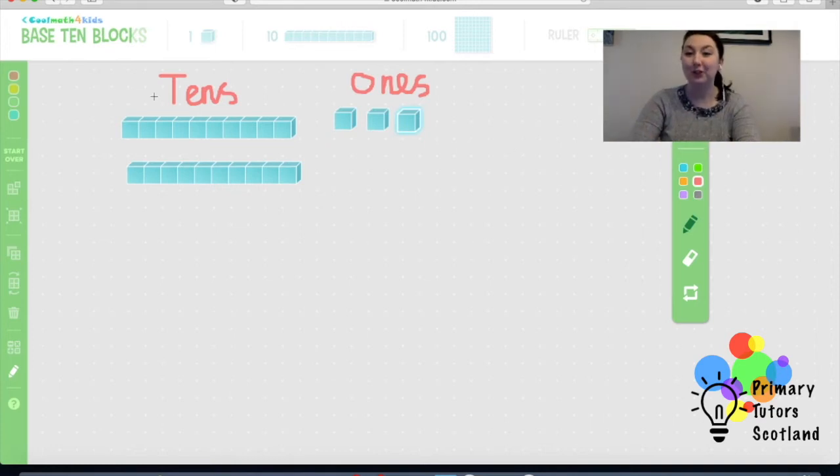So right now we're going to do an example of tens and ones. What number do I have here looking at the base 10 blocks? Well I've got 10, 20. Now I could count 1, 2, 3, 4, 5 all the way, but we know that this is a 10, this is another 10, so I've got two tens which is 20. And then how many ones do I have? 1, 2, 3. That's easy.